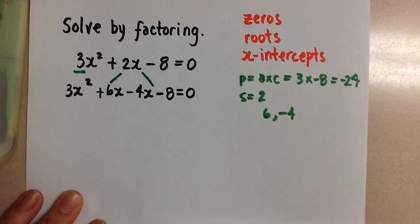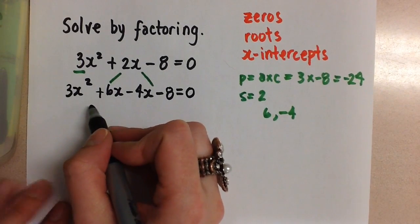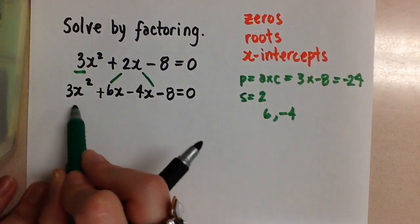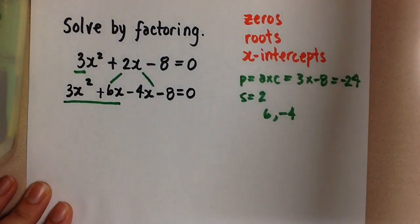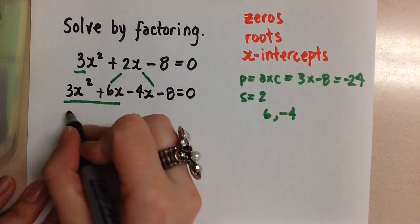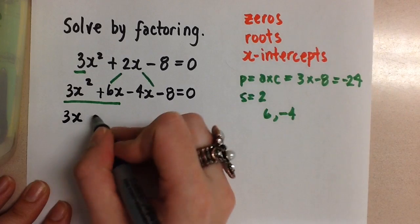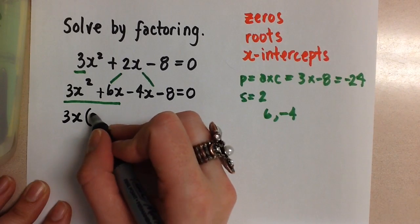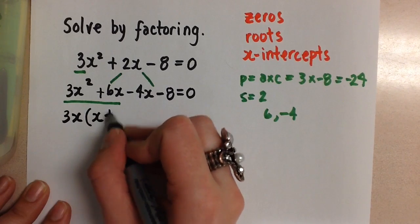Now we're going to factor by grouping. So I'm going to factor the first two terms only by pulling out a 3x. So 3x, and that leaves me with x + 2.